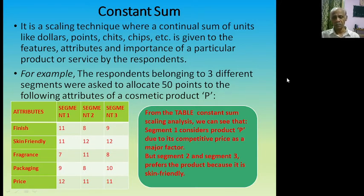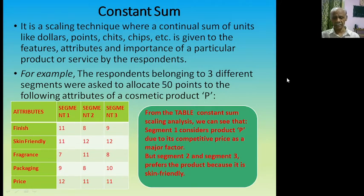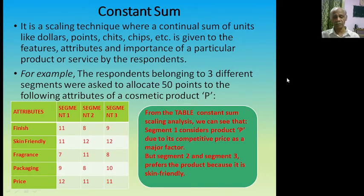For every attribute, the respondents have given their preferences. In segment 1, finishing was preferred by 11 people; in segment 2 by 8 people; in segment 3 by 9 people. Regarding skin friendly, segment 1 had 11 people, segment 2 had 12 people, and segment 3 had 12 people. For fragrance, segment 1 had 7 people, segment 2 had 11 people, and segment 3 had 8 people. For packaging, segment 1 had 9 people, segment 2 had 8 people, and segment 3 had 10 people. For price, segment 1 had 12 people, segment 2 had 11 people, and segment 3 had 11 people, totalling 50 points each.